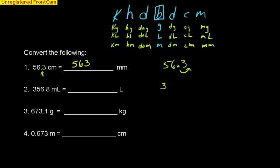I'll just rewrite it here, so we can take a look at the decimal place movement. 356.8, and we're going from milliliters to liters. So, milliliters is right here, and I'm going to go over to liters, so I have to move that decimal place one, two, three to the left.